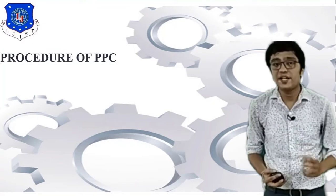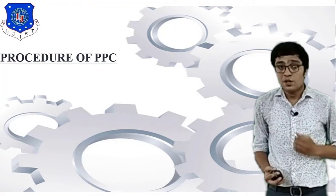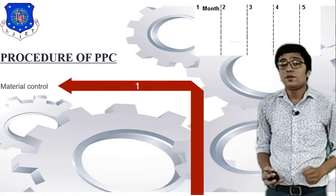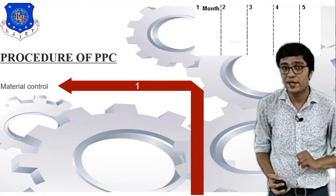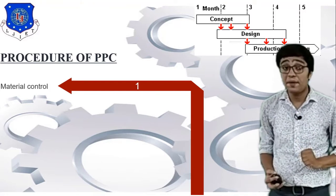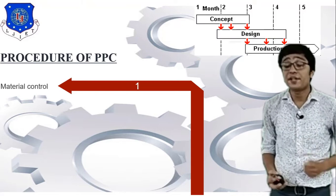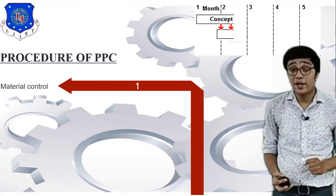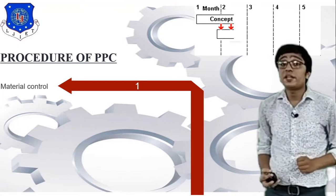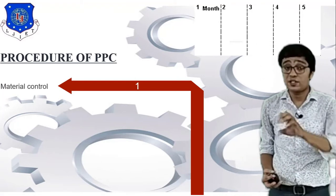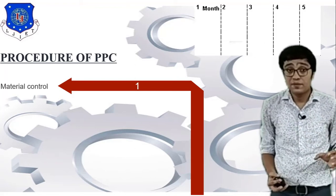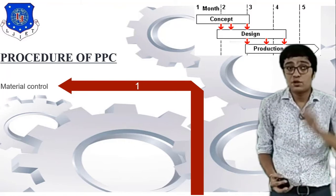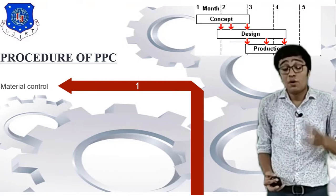Moving forward to the procedure of Production Planning and Control — there are mainly eight steps. The first and most important step is material control. Material control depends on raw material availability: based on the operation, you must calculate how much material is required in that particular process.